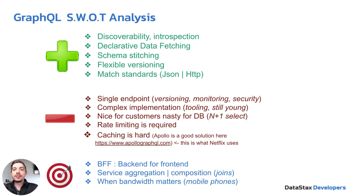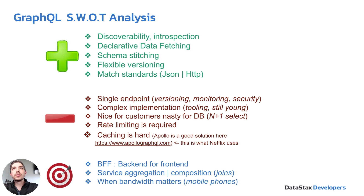Analyzing the strengths and weaknesses of GraphQL: strengths include declarative data fetching — being able to specify the data you want — flexible versioning, and it matches standards using JSON and HTTP. Weaknesses include using a single endpoint rather than multiple endpoints like REST, making security and monitoring more difficult. It has a complex implementation, is still maturing, and caching is hard — though solutions exist, like Apollo, which Netflix itself uses. The main target for GraphQL is the back end for front end as well as mobile bandwidth considerations.